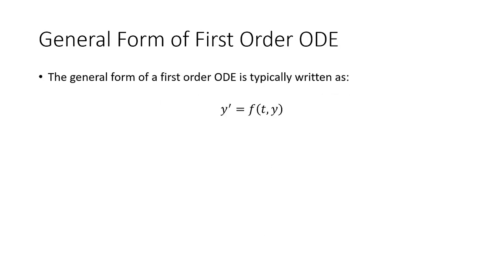So to broaden that, the general form of a first-order ODE can typically be written as y' equals f(t, y), or as dy(t)/dt equals some function of time and y, which is a function of time.